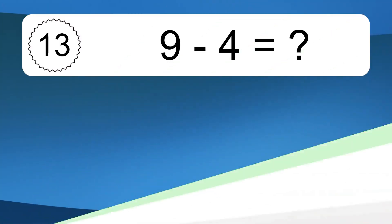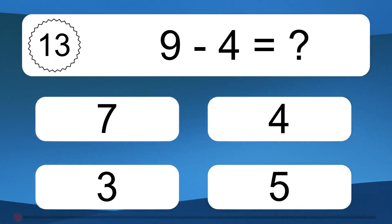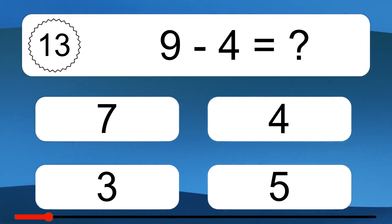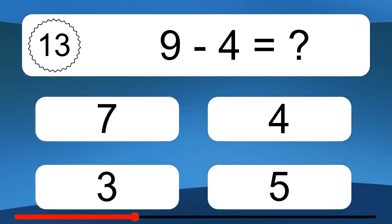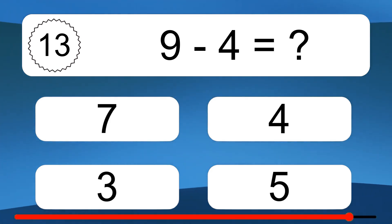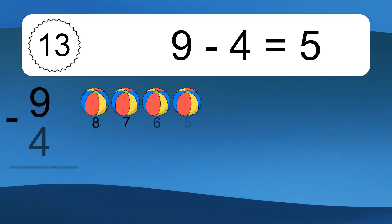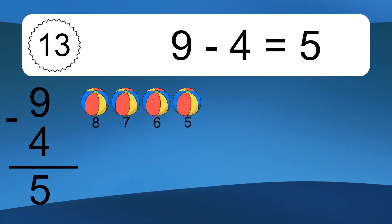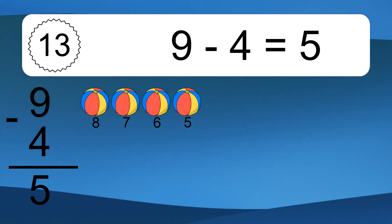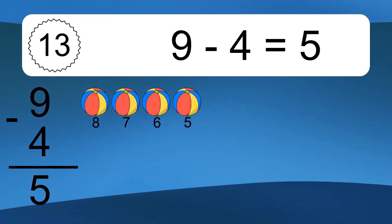9 minus 4 equals what? 9 minus 4 equals 5. Let's count it: 8, 7, 6, 5.